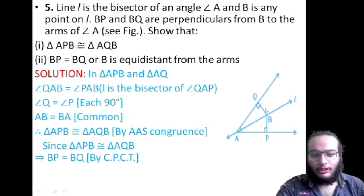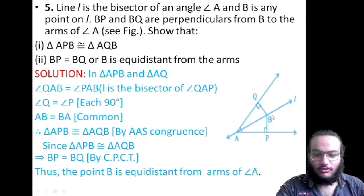Then the solution to the second question, i.e., BP is equal to BQ, follows by the CPCT rule. Hence, B is equidistant from the arms. Hence, this question is proved.